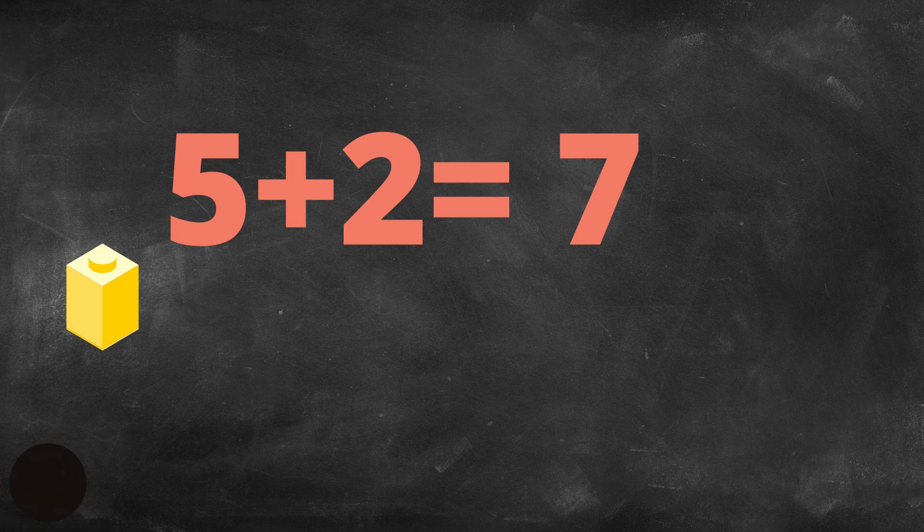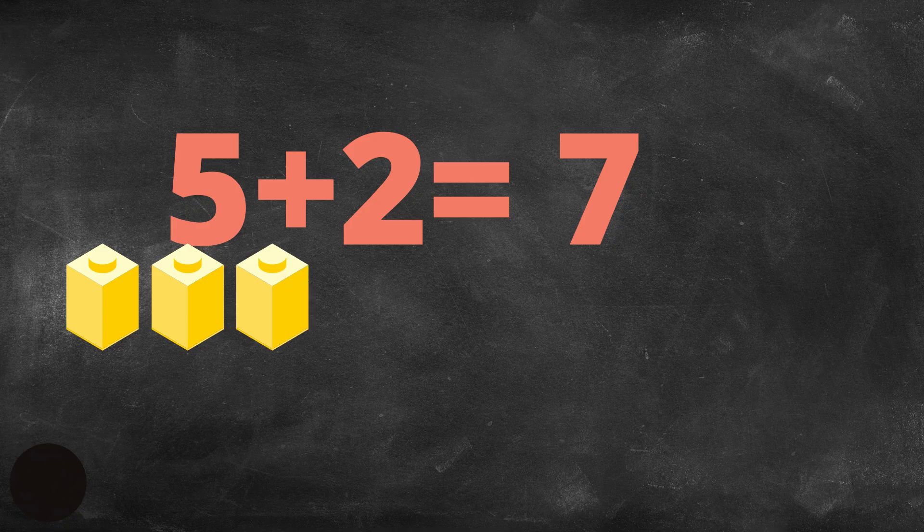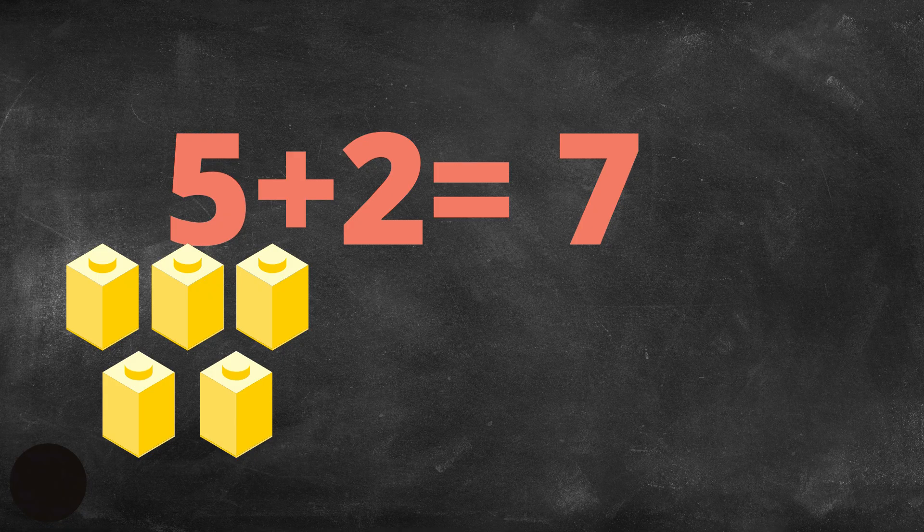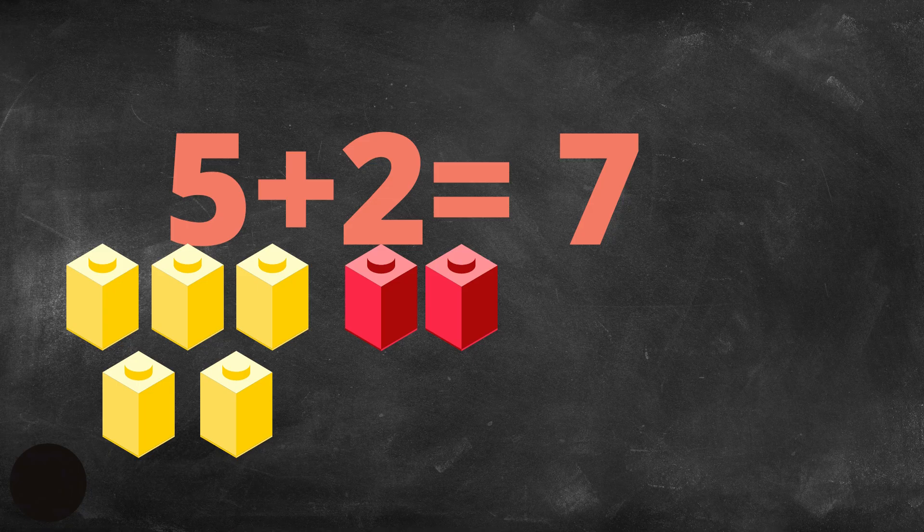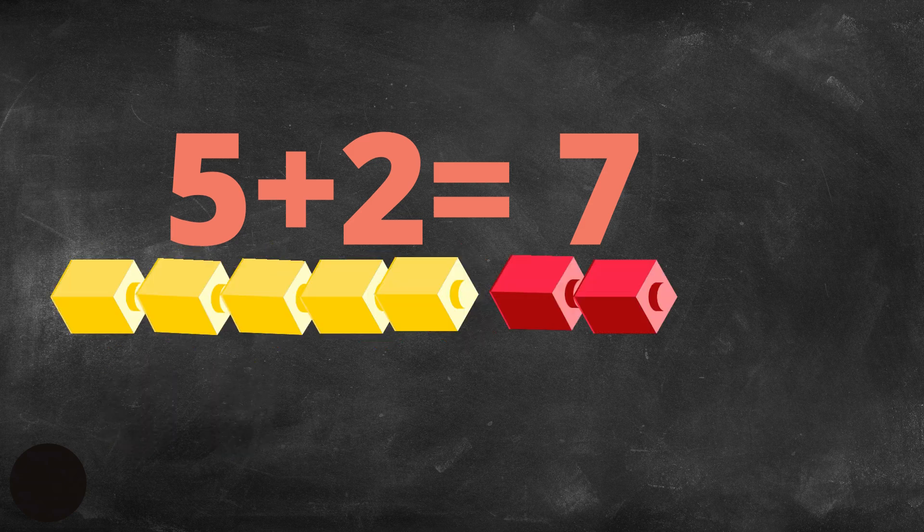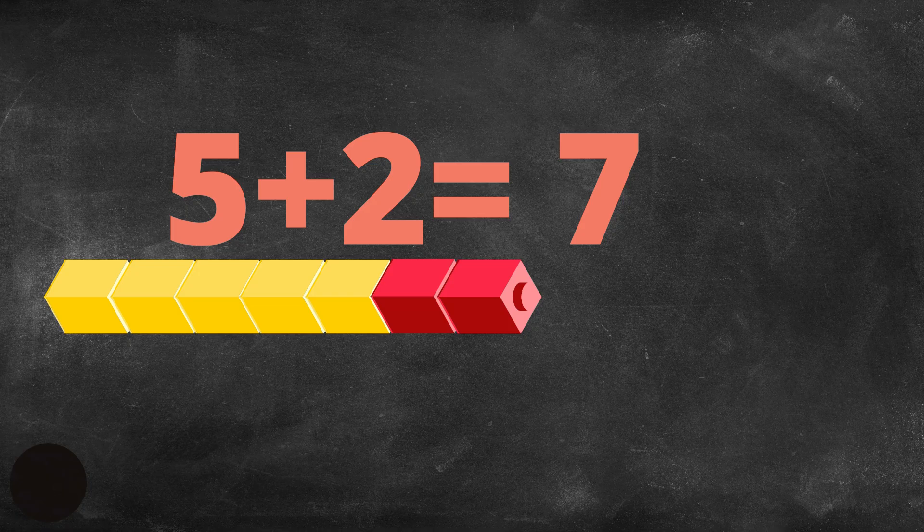We're going to use cubes to represent this addition sentence. Here's 1 yellow cube, 2 yellow cubes, 3, 4, 5 yellow cubes to represent the digit 5, the addend 5. And we're going to use the red cubes to represent the addend 2. Here's 1, 2. Now we have 5 yellow cubes and 2 red cubes. Let's make a cube train and put them together.